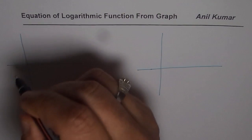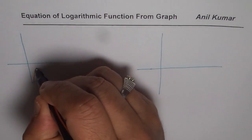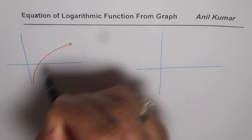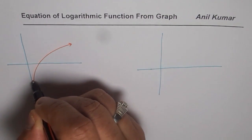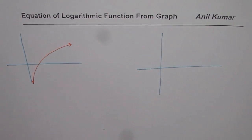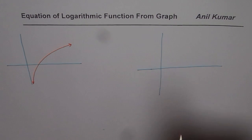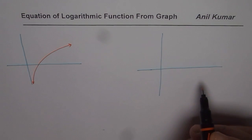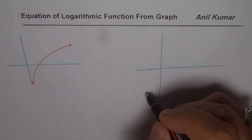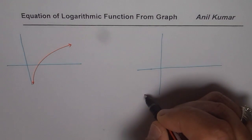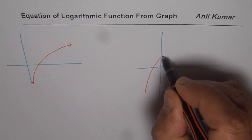One of the graphs looks like this — that is the logarithmic function. You can see that the domain is restricted, so therefore it represents a logarithmic function. Sometimes students get confused between logarithmic and exponential functions. In exponential functions, the domain is not restricted. Now let me draw another transformed function here.